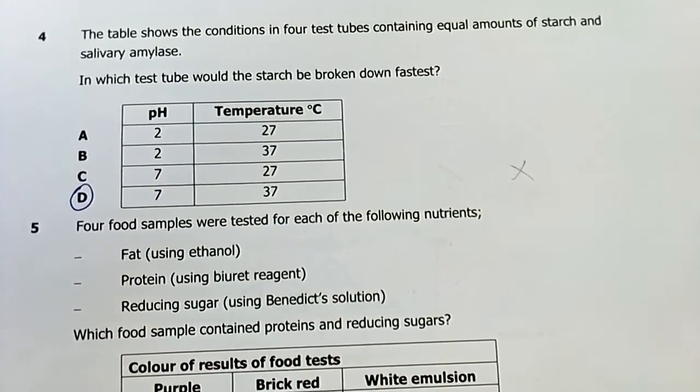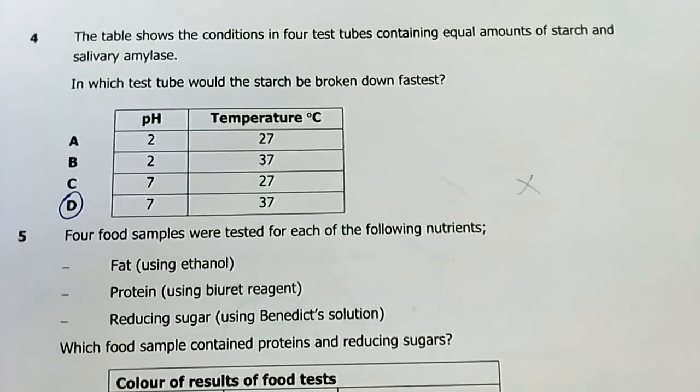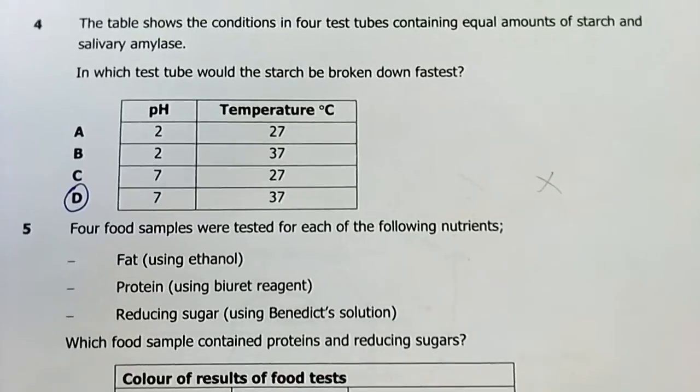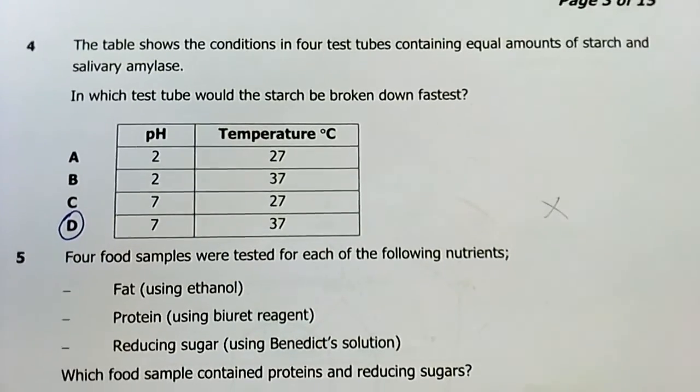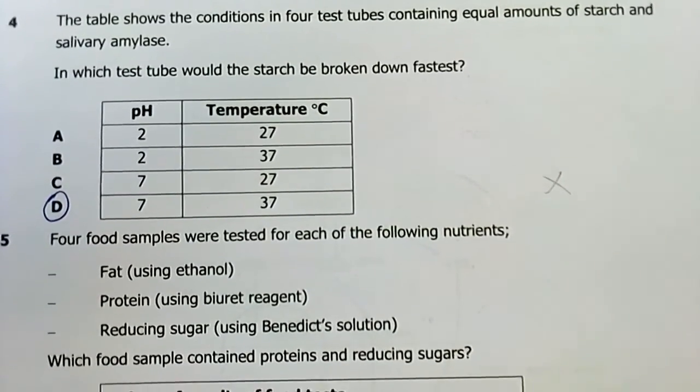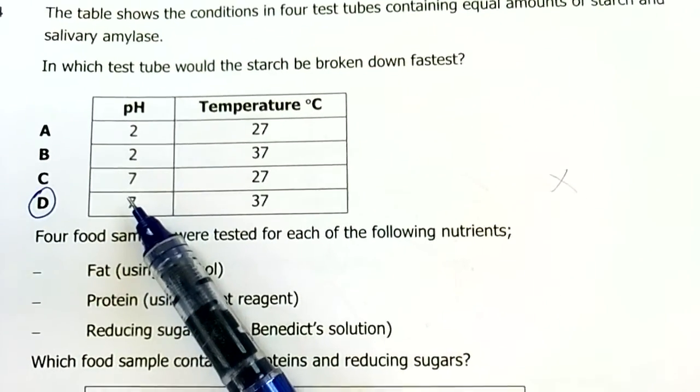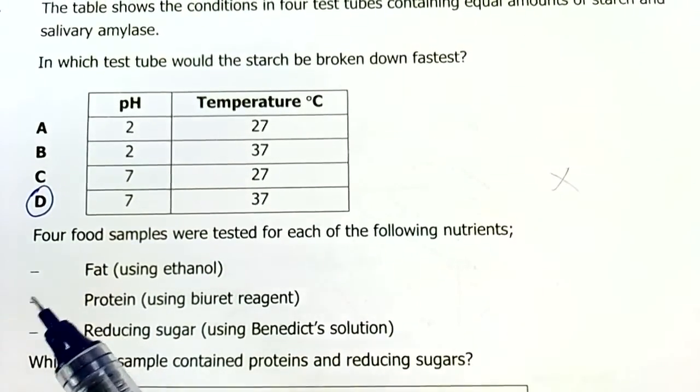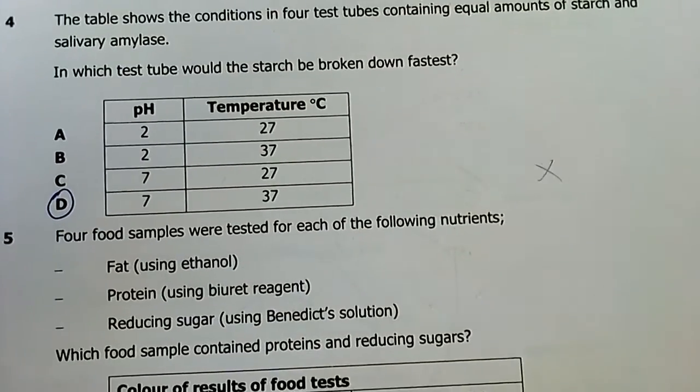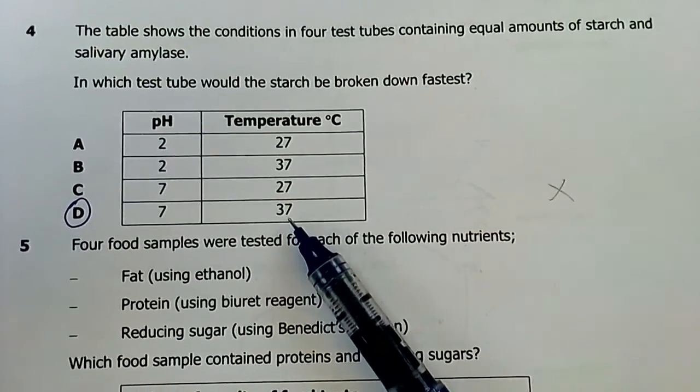Number four: the diagram shows conditions in four test tubes containing equal amounts of starch and salivary amylase. Starch is the substrate of salivary amylase. Salivary amylase works better at pH neutral in the mouth, the optimum pH is seven. For temperature, you follow the human body temperature, which is why if you measure someone's body temperature you put the thermometer in the mouth. So you don't go for 27, that's 37 degrees Celsius, the human body temperature. Our answer is D.